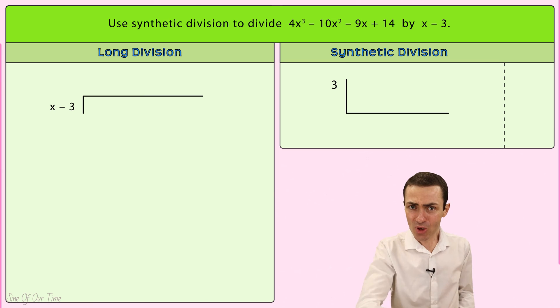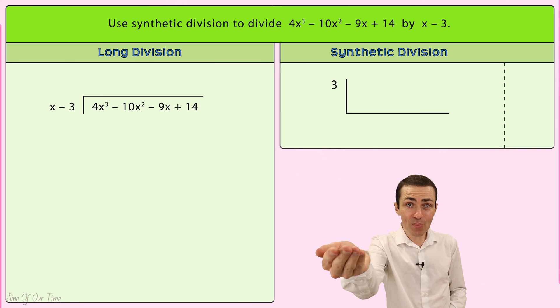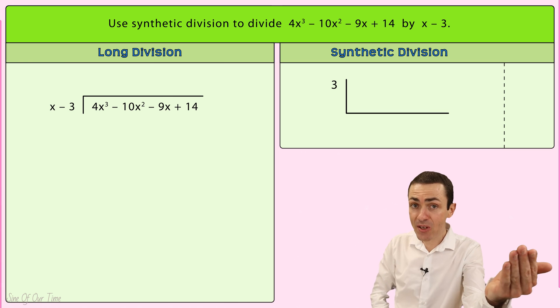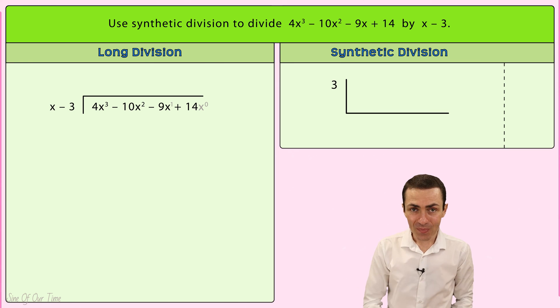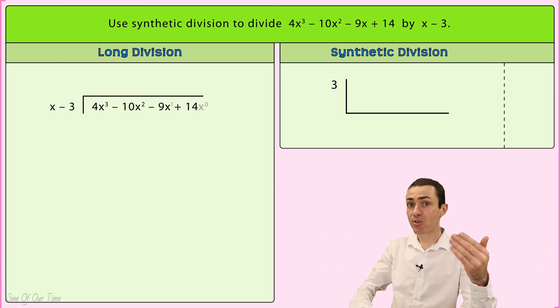Now, we make sure that the terms of the dividend are written in descending order or descending powers of x. Descending just means from the highest exponent of x down to the lowest exponent of x, which is the case in this example. And then we scan the dividend to ensure that it includes all powers of x all the way from 3 down to 0.